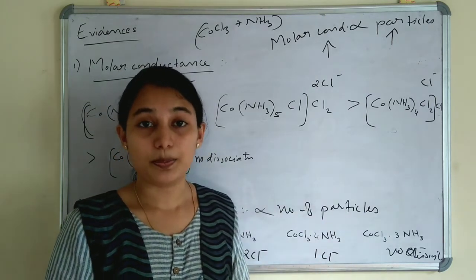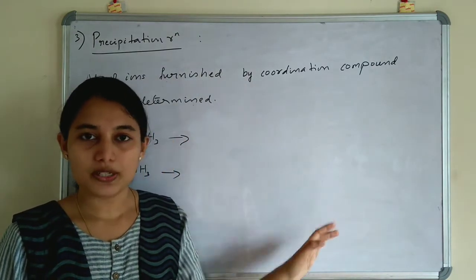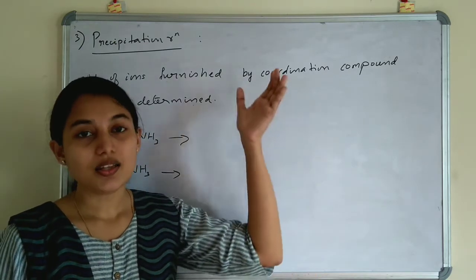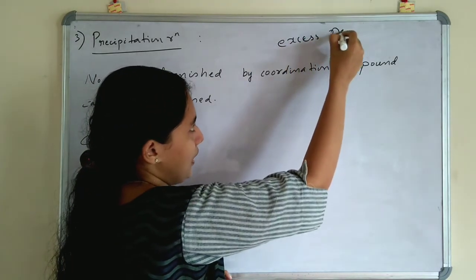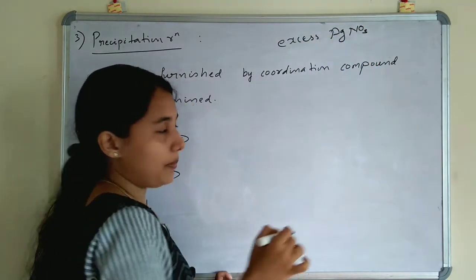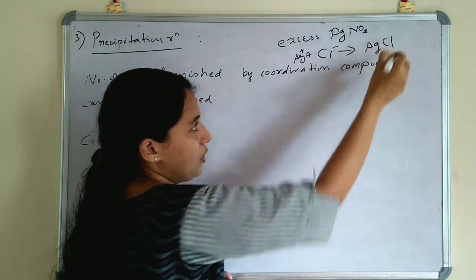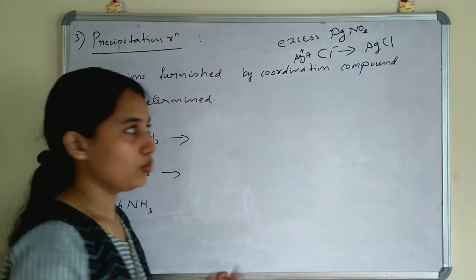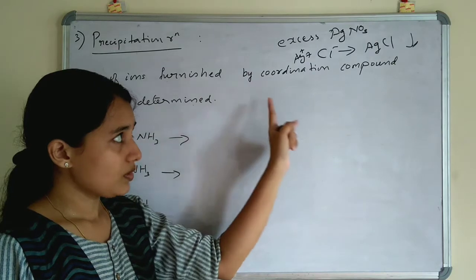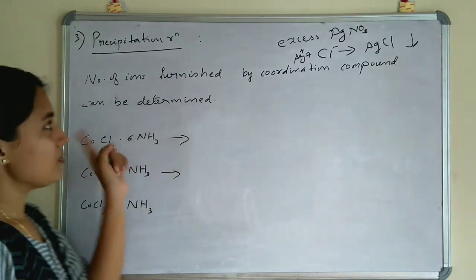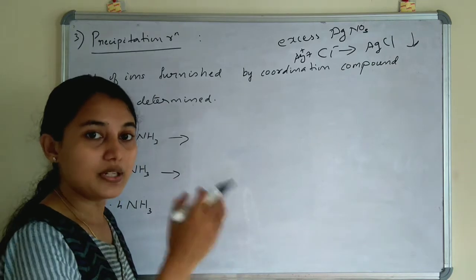The depression in freezing point and molar conductance both depend upon number of particles — those are 2 evidences. The third evidence is precipitation reaction. In the precipitation reaction, we add excess AgNO₃ to these compounds. If Cl⁻ is present, then Ag⁺ and Cl⁻ form AgCl precipitate. So precipitation reaction is used for determining the number of ions furnished by a coordination compound.